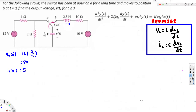So these are the two initial conditions, and we have to know what happens after we flip the switch. After we flip the switch, the voltage across the capacitor and the current through the inductor do not change immediately. So V(0⁻) equals V(0⁺) and I(0⁻) equals I(0⁺).